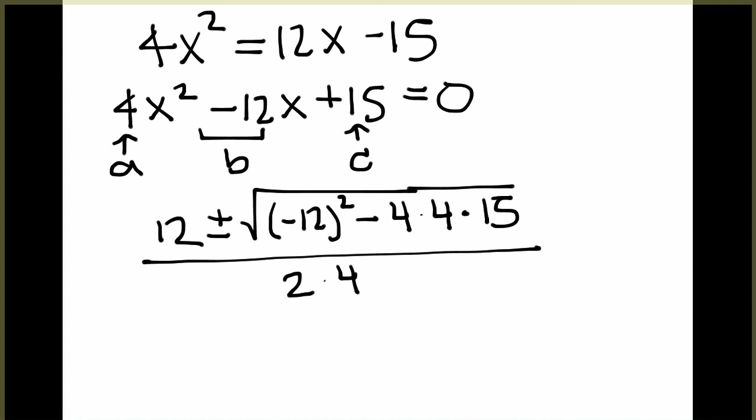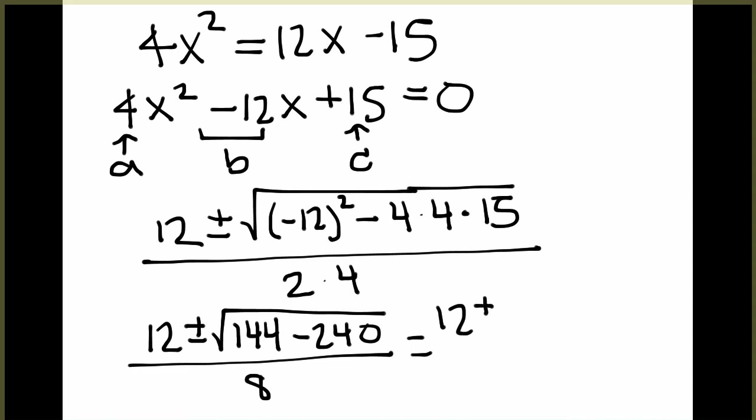I think the easiest way to evaluate this expression is to first simplify the part underneath the square root. Negative 12 squared is 144. 4 times 4 times 15 is 240. And all of that will be divided by 8. If we simplify the square root further, we find that we're taking the square root of negative 96.